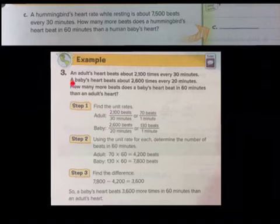Now we're not going to use an adult's heart rate. We're just going to use the baby's heart rate and compare it to the hummingbird's heart rate by following these steps. I believe you guys can do this on your own. I'm looking forward to your answer. That's it for today's video.